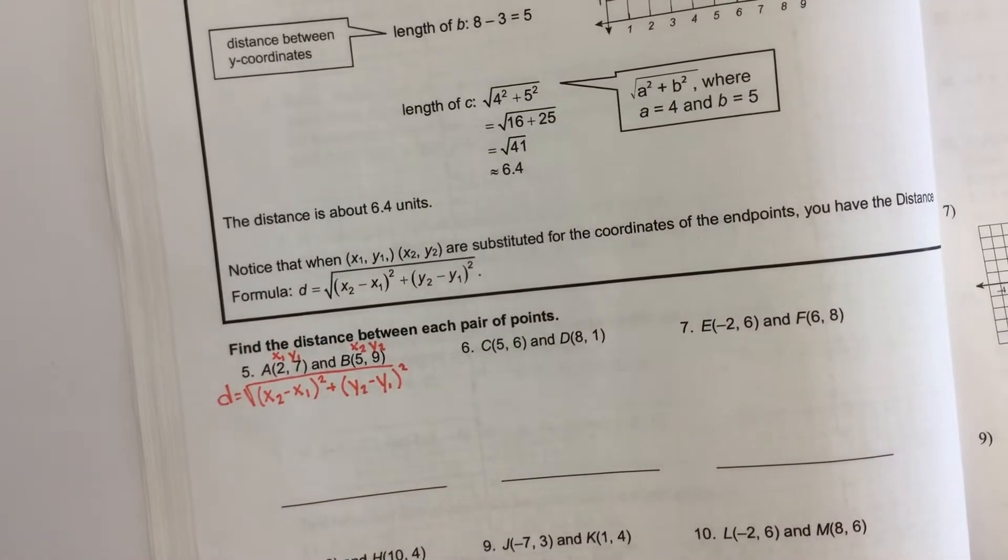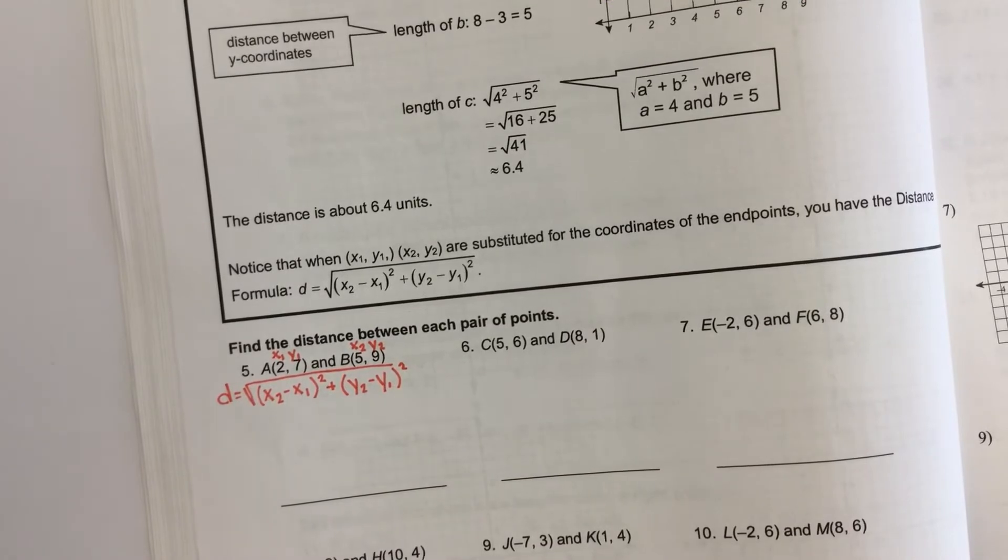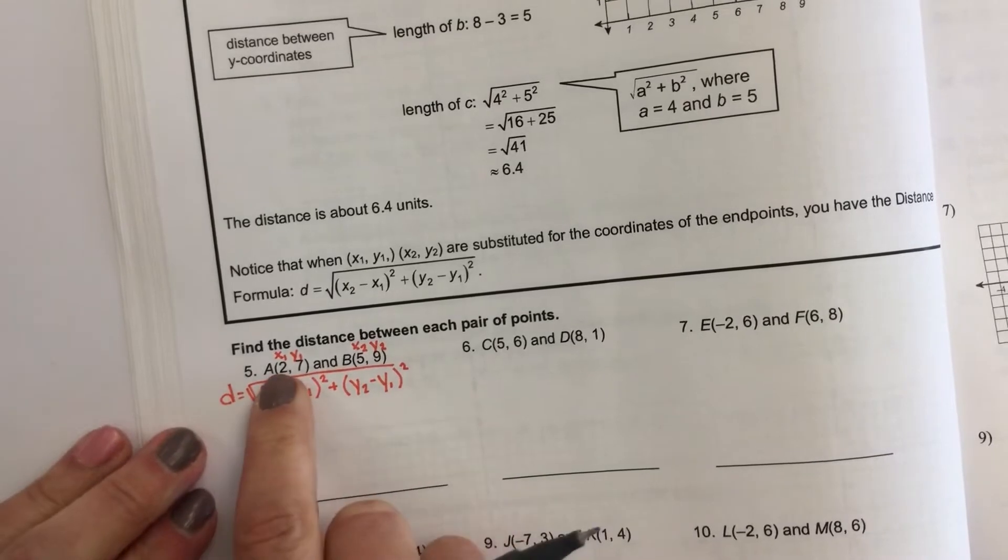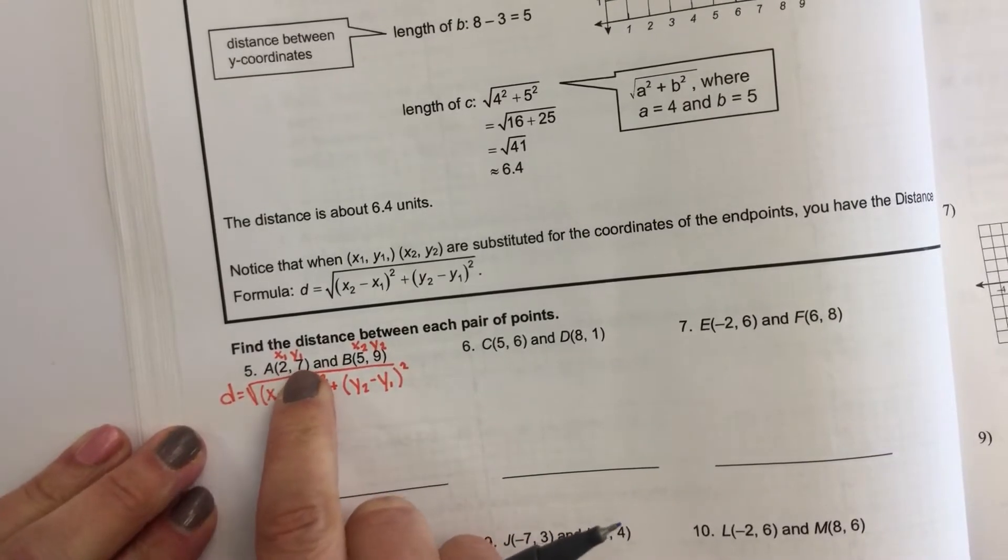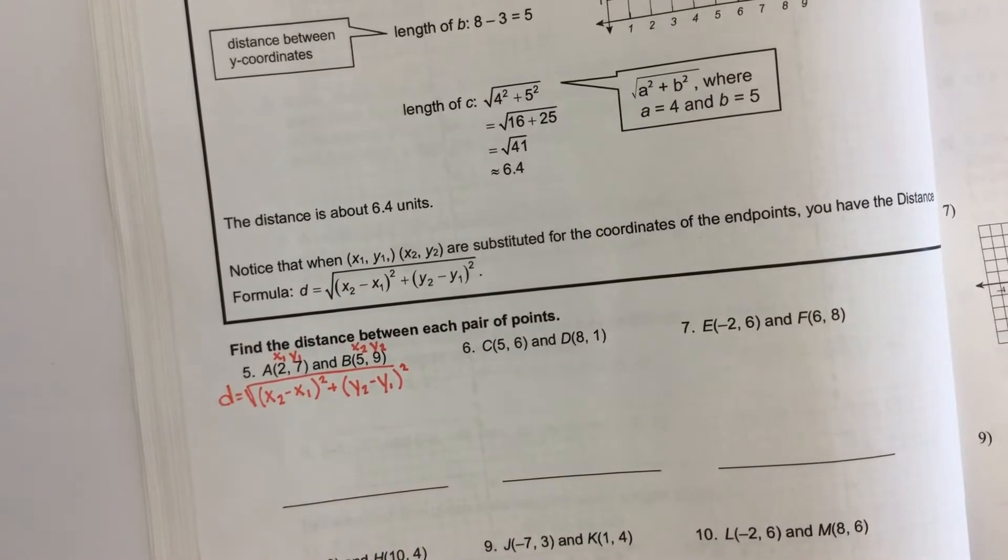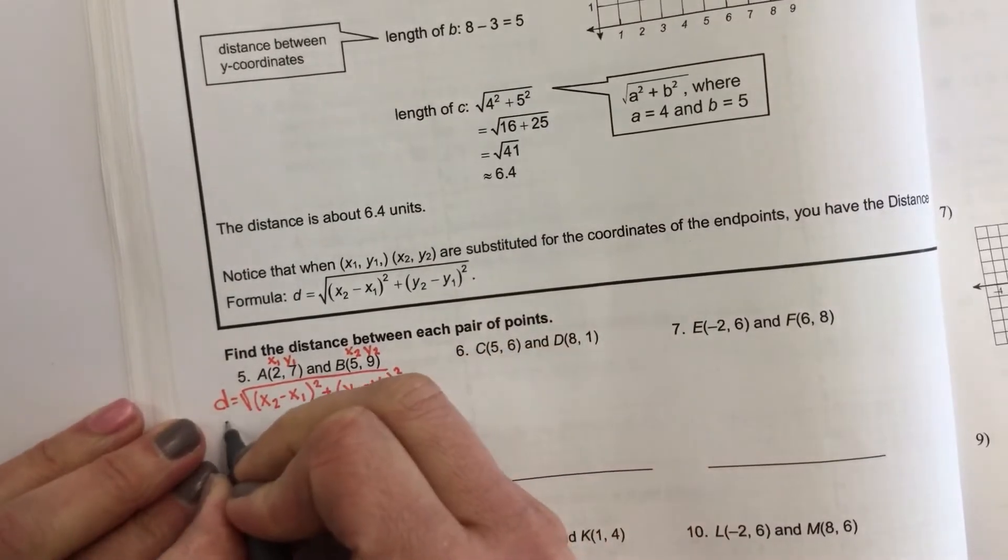Now it doesn't matter what set of ordered pairs you call your 1s and which one you call your 2s, but they can't intermix. So you can't have x1 and then y2. It doesn't work. So now we're going to go to our ordered pairs.